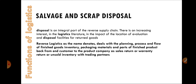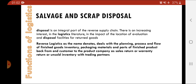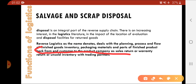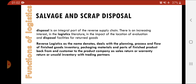Moving on to salvage and scrap disposal. Reverse logistics, as the name denotes, deals with the planning process and flow of finished goods, inventory, material, packaging material, and parts of finished goods back from the end customers to the product company — as sales returns, warranty returns, or unsold inventory with trading partners. So if a product is under warranty and there is a problem, it comes back to the firm. Similarly, if trading partners couldn't sell the product in the market, it also comes back to the firm. In this way, logistics must also take care of salvage and scrap disposal.